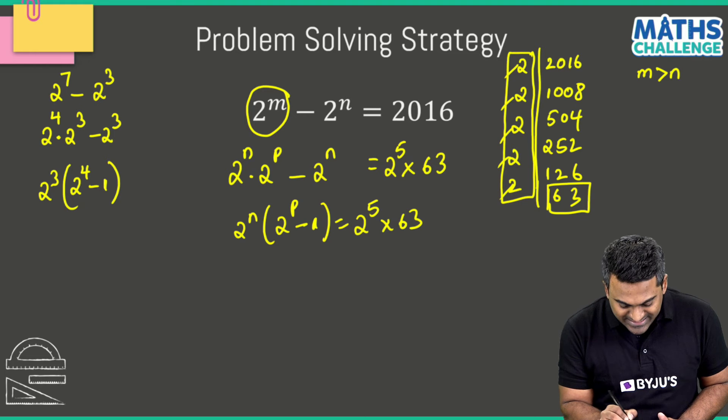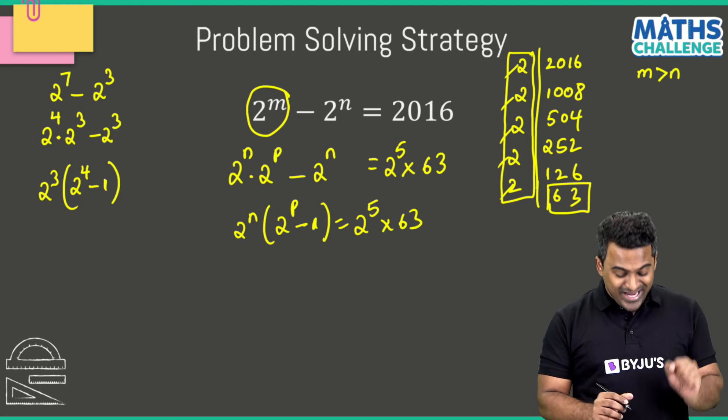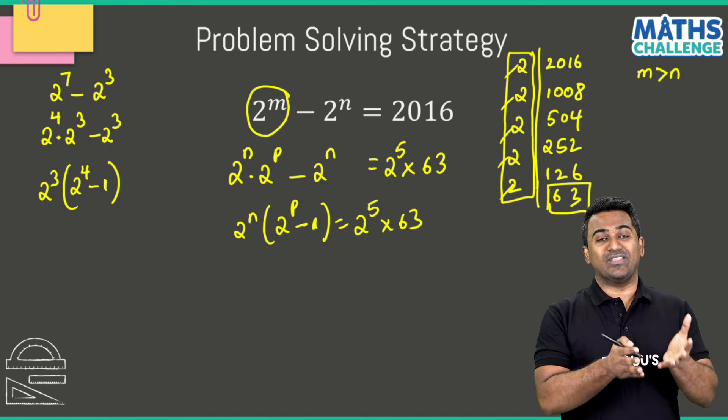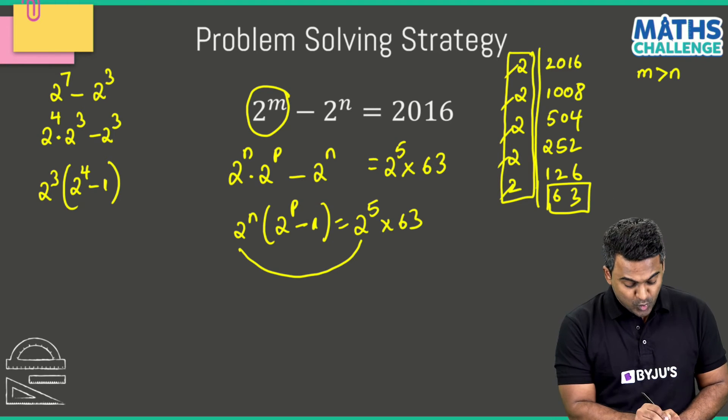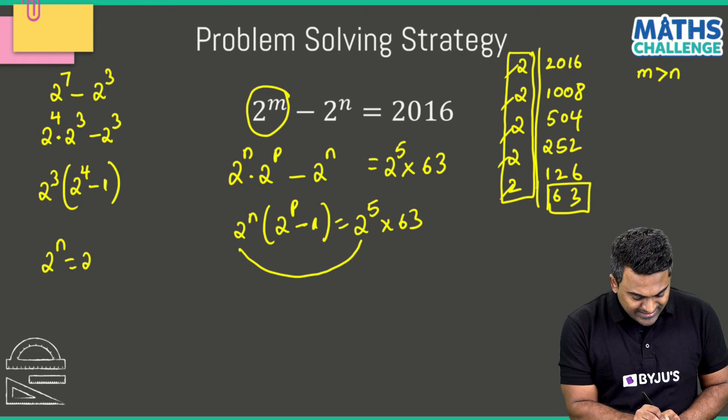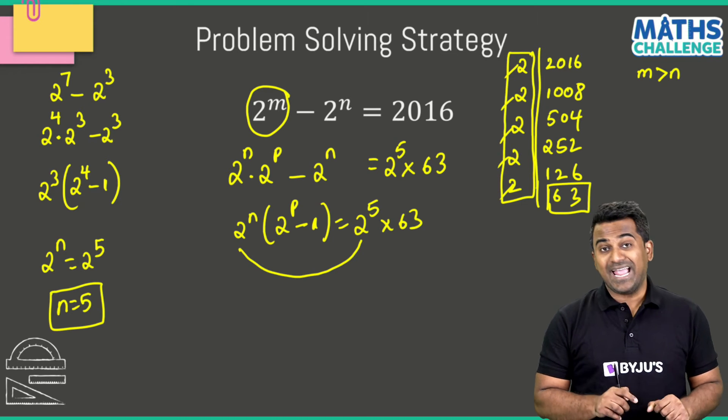Equals 2 power 5 multiplied with 63. There you go. Now I can compare the terms on the left hand side and the right hand side. And yeah, it could be the case that 2 to the power n is equal to 2 to the power 5. So when this is the case, I've found my n value as 5, right?